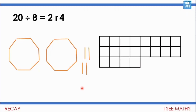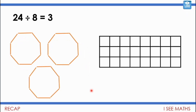Now if it was 22 divided by 8, what would be different? I would still have 2 whole 8s, but this time I'd have 6 left over, as you can see with these two representations. Now what about when I add another 2 and get up to 24 divided by 8? Well of course now I've got three whole 8s, as shown here.